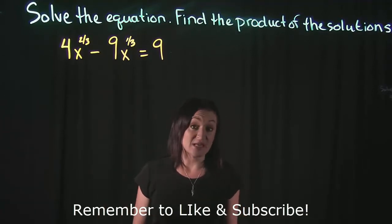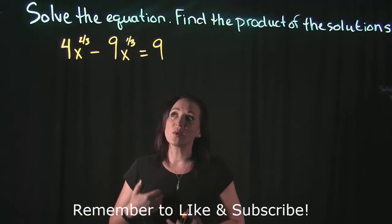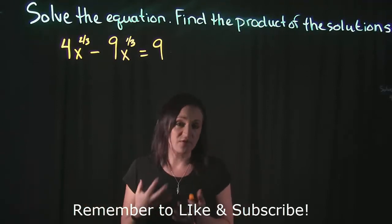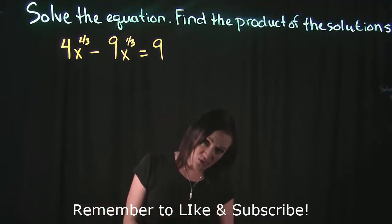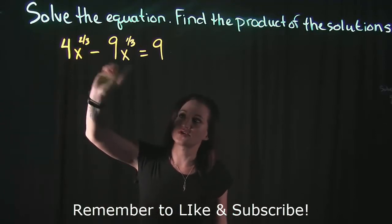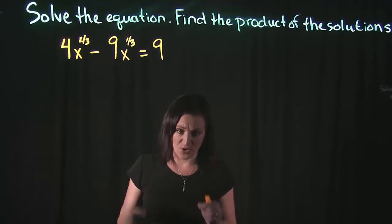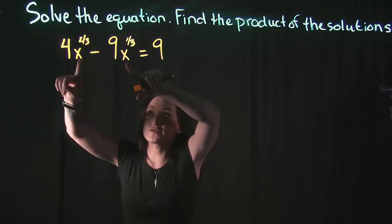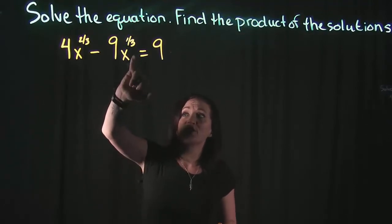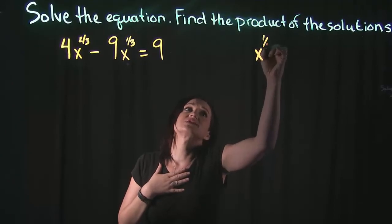We tend to not like fractions, and when we have them as exponents it does look a little more scary. So what we're going to want to do is a substitution to try and get rid of the fractions and make the work a little bit easier so that we can solve. Since one exponent is x to the 2/3 and one is x to the 1/3, we're going to find the lowest common factor of the two — and for variables raised to a power, we want the one with the lowest power. 1/3 is smaller than 2/3, so our lowest common factor is x to the 1/3.